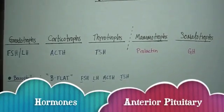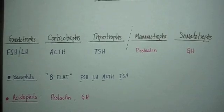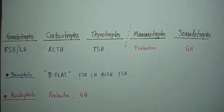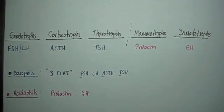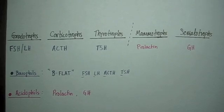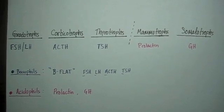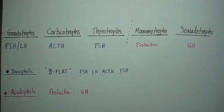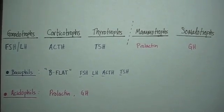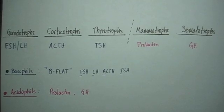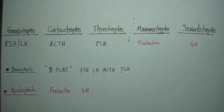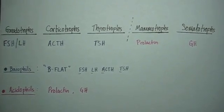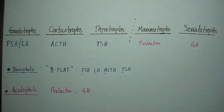The six major hormones produced in the anterior pituitary are FSH, LH, ACTH, TSH, Prolactin, and GH.